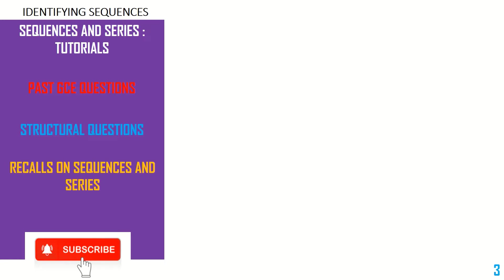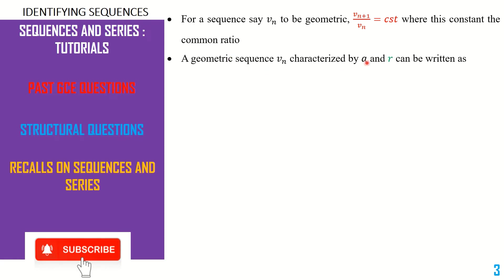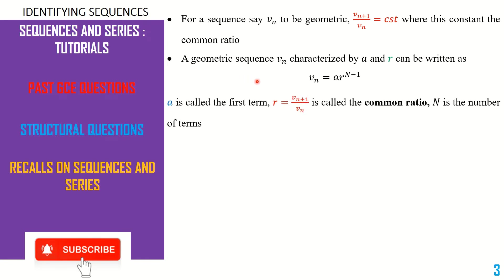The very first thing we are going to look at is identifying sequences — how to identify sequences and find their nth terms. For a sequence Vn to be geometric, the ratio between the (n+1)th term and the nth term must equal a constant, called the common ratio. If we characterize a geometric sequence by first term a and common ratio r, then Vn = a·r^(n−1). Here, a is the first term, r is the common ratio, and capital N is the number of terms.